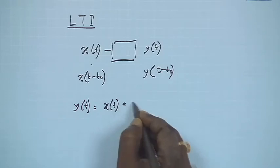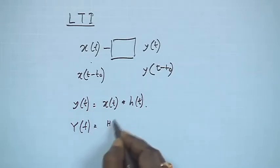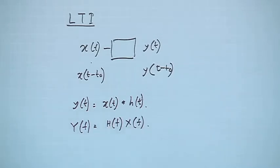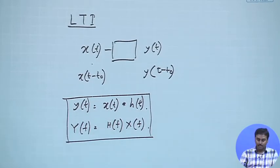That was the linear time invariant system. We said it can be characterized by only one thing, which is the transfer function or the impulse response. If I put an input x(t), the output will always be the convolution of the input with the impulse response: y(t) = x(t) convolved with h(t). The corresponding Fourier transform gives Y(f) = H(f) times X(f). These two things are always true for a linear time invariant system.